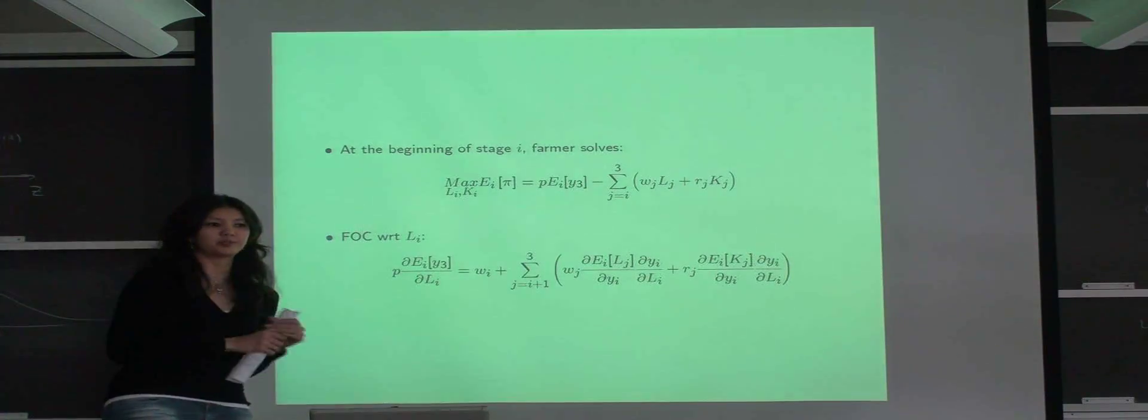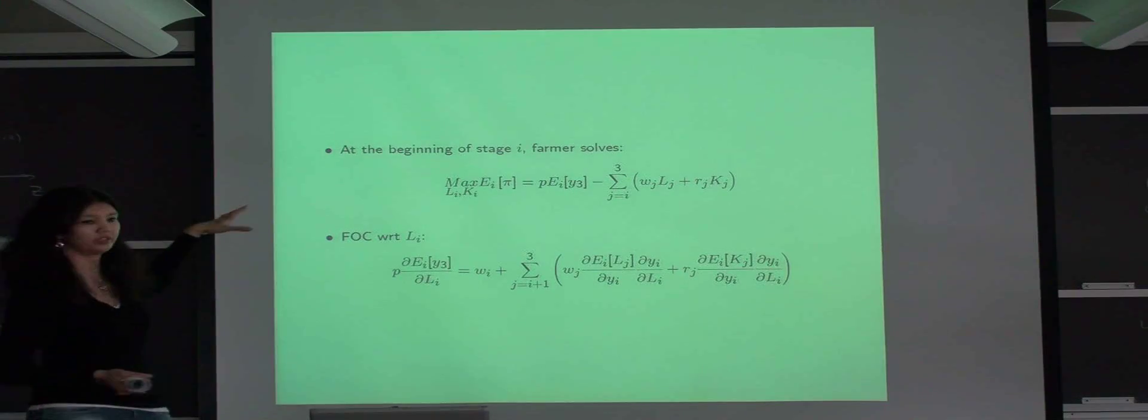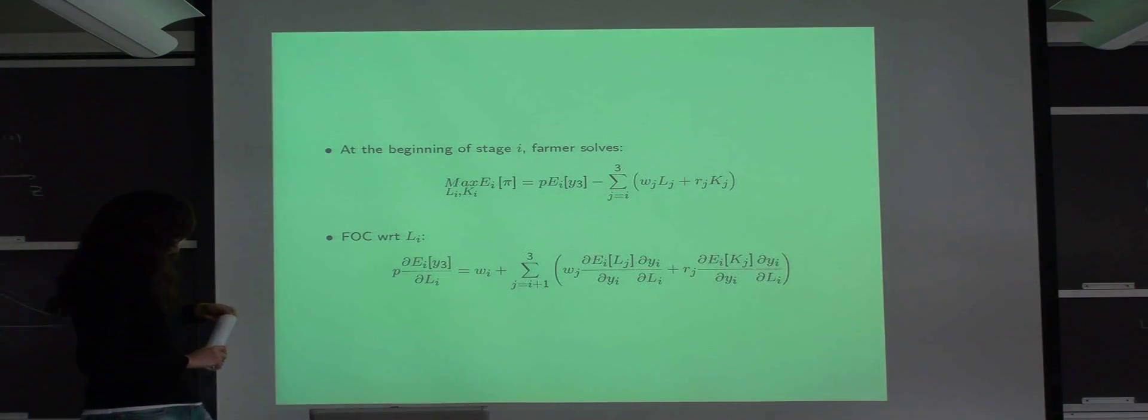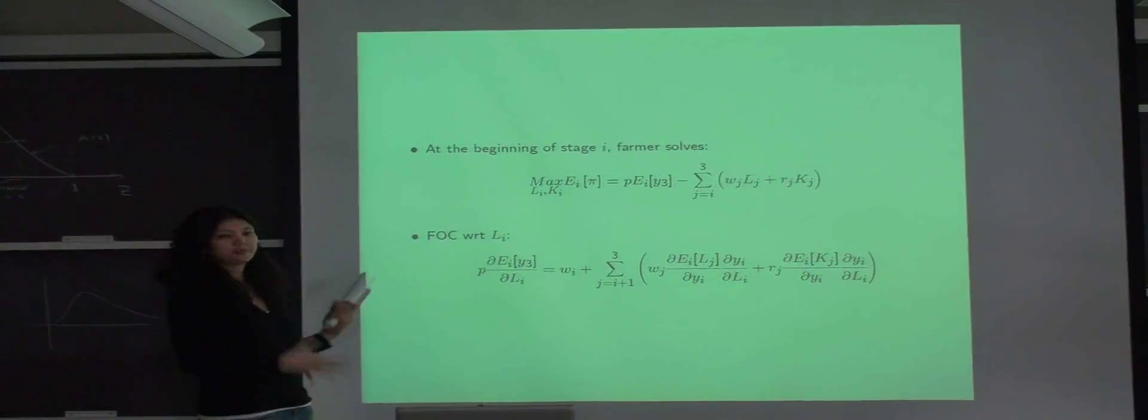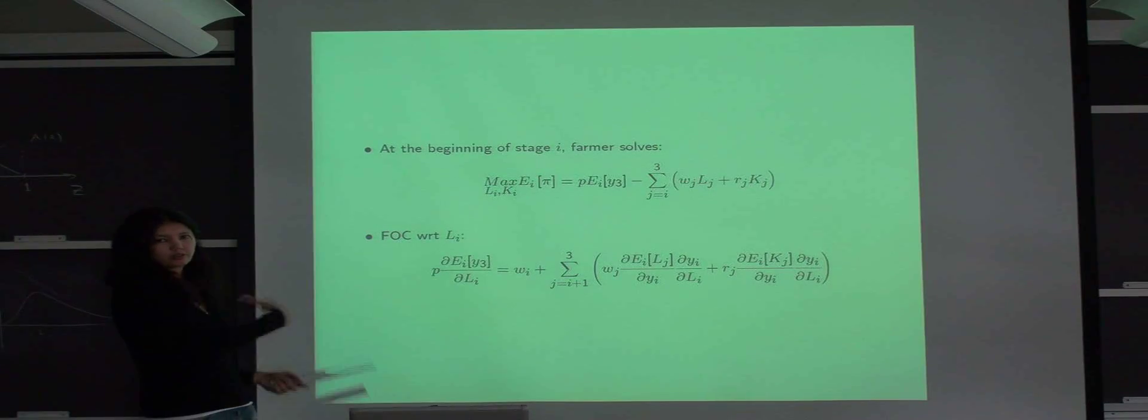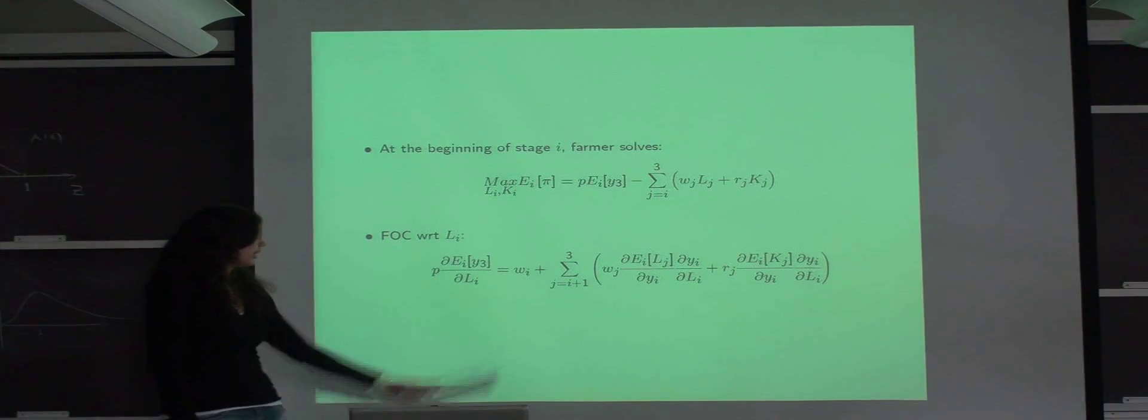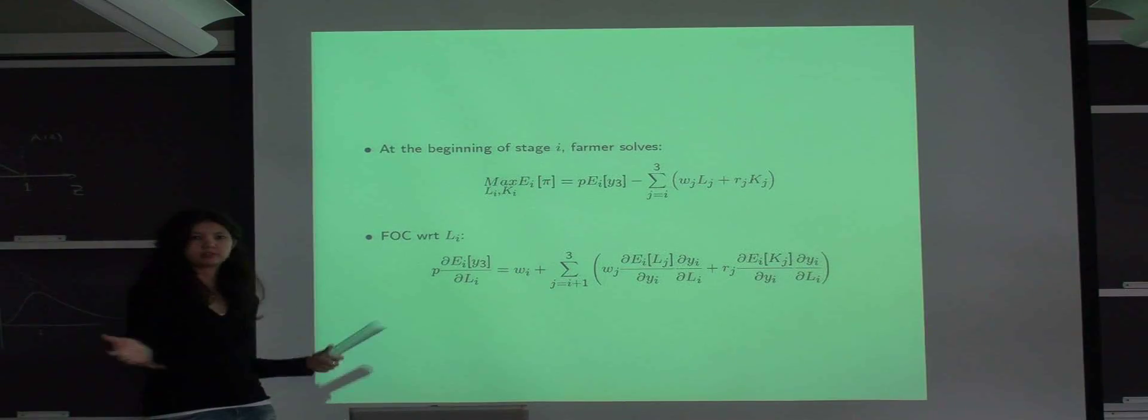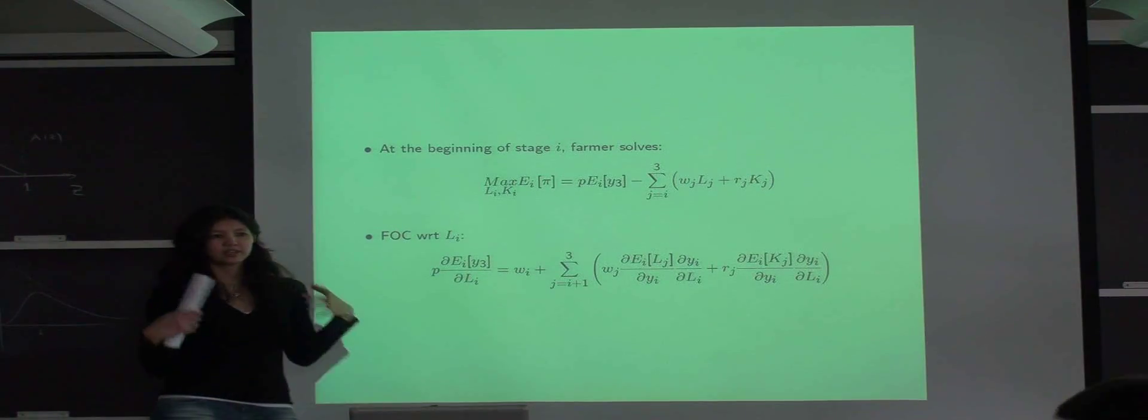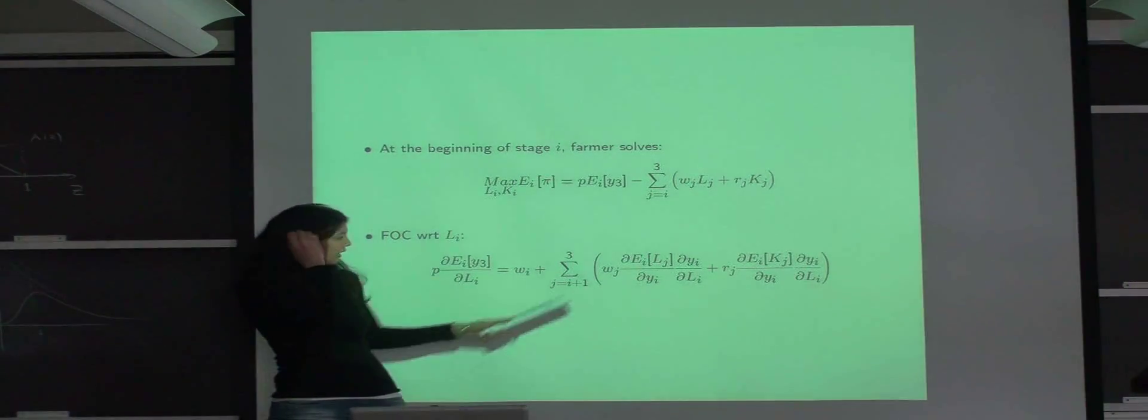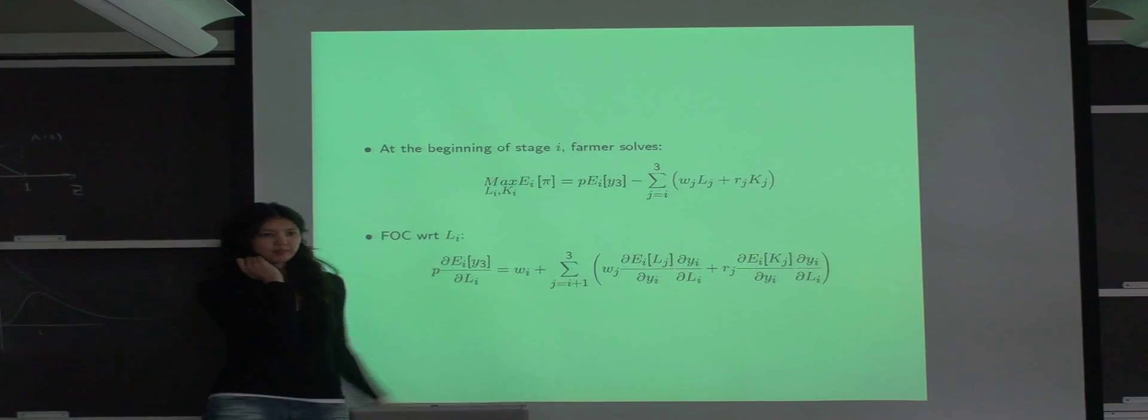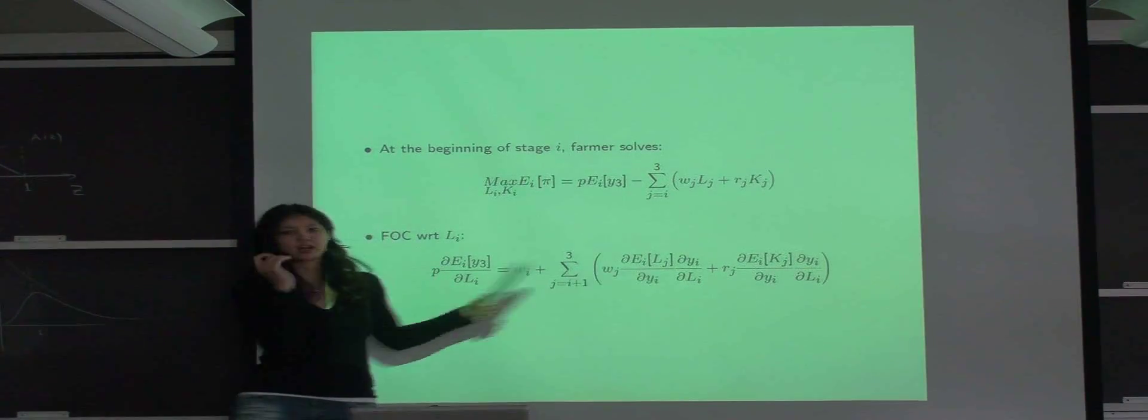We assume that farmers maximize expected profits in the beginning of each stage i, which is when they make the input decision. And if we look at the first order condition for intermediate input, in this case intermediate labor, we see that its marginal cost and marginal product has two components. One is the current component, which is just current price of the input. And another is the future component, which reflects changes of farmers' adjustments of input levels in future stages in response to the changes in crop growth development due to changes in levels of current inputs used.